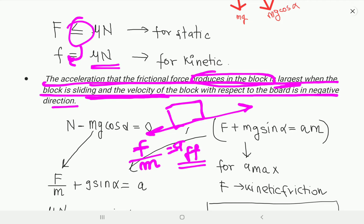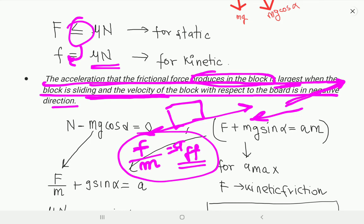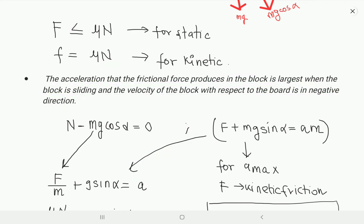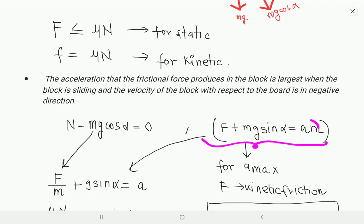Since the relative velocity is in the negative direction, friction acts in the forward direction, supporting the motion and increasing the acceleration. Now writing the equations: from the free body diagram, N minus Mg cos alpha equals 0, and F plus Mg sin alpha equals M*a, where M is the mass of the block and a is the acceleration of the block.